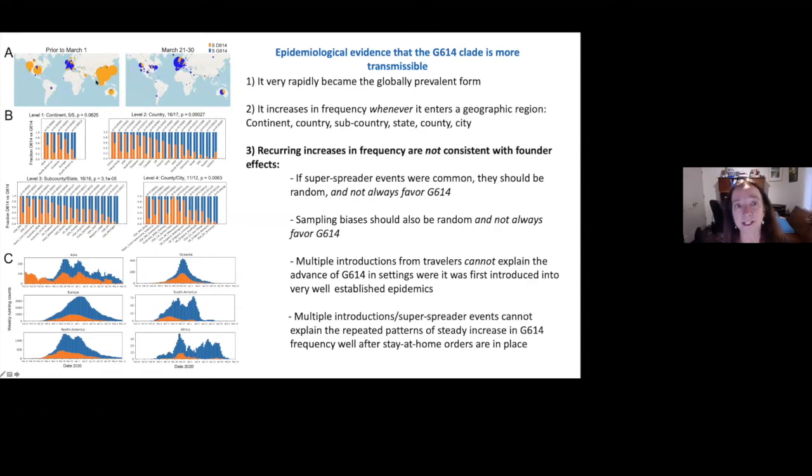This shows you, prior to March 1st, there was very well established epidemics in many parts of the world. The orange is always going to be the original form, and the blue is always going to be the G614 form. And you can see, just within three weeks, the shift towards G614 had happened globally. And in the beginning of April, I looked at this and I started to get concerned about it, because to me, what was really striking is that places with very well established epidemics would have these introduced.